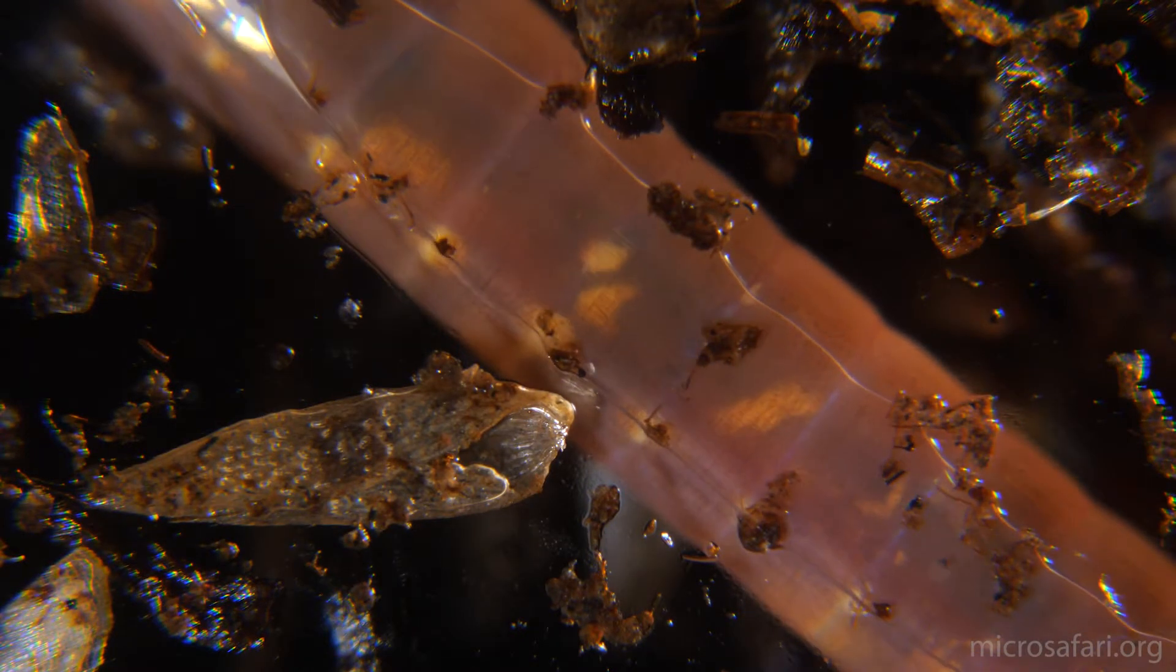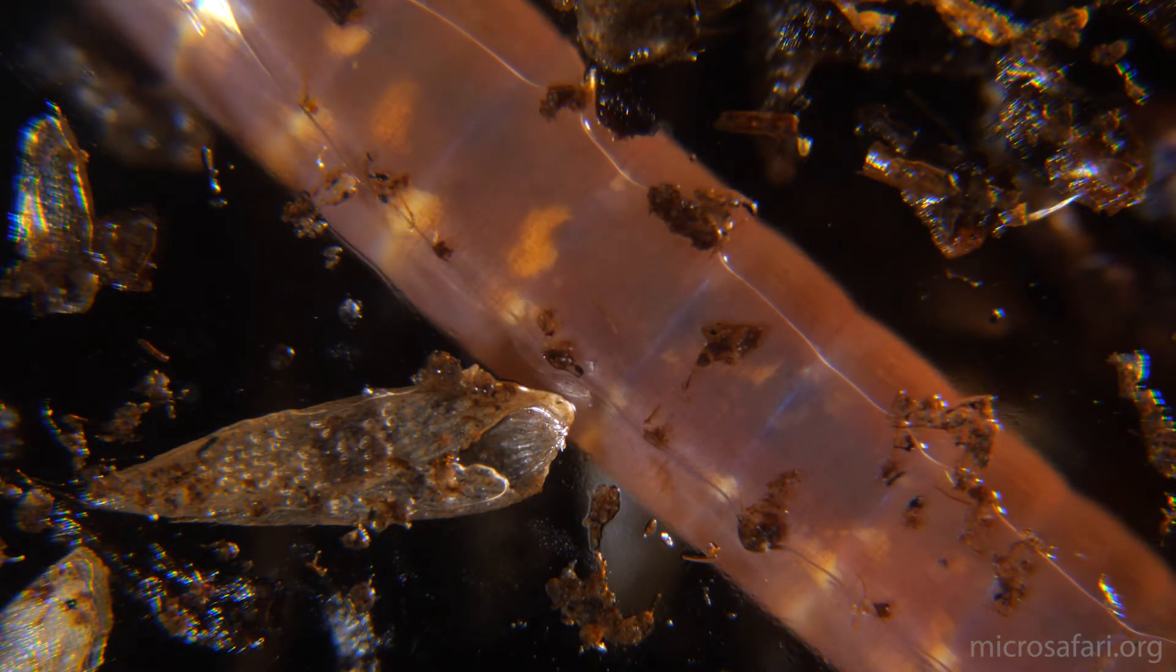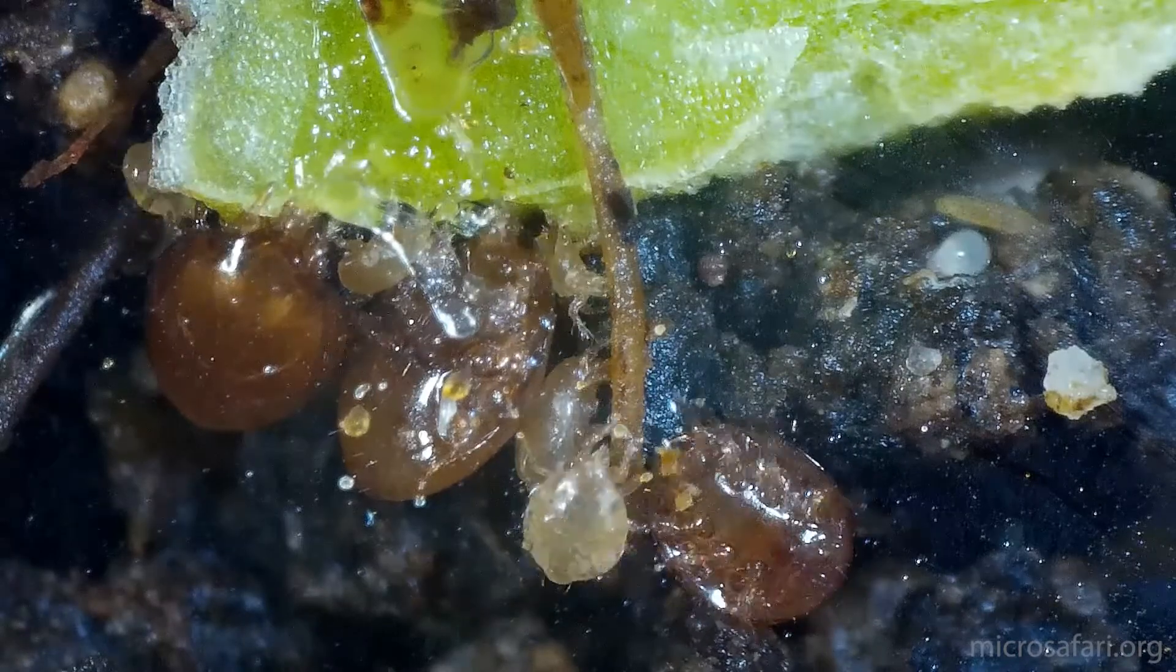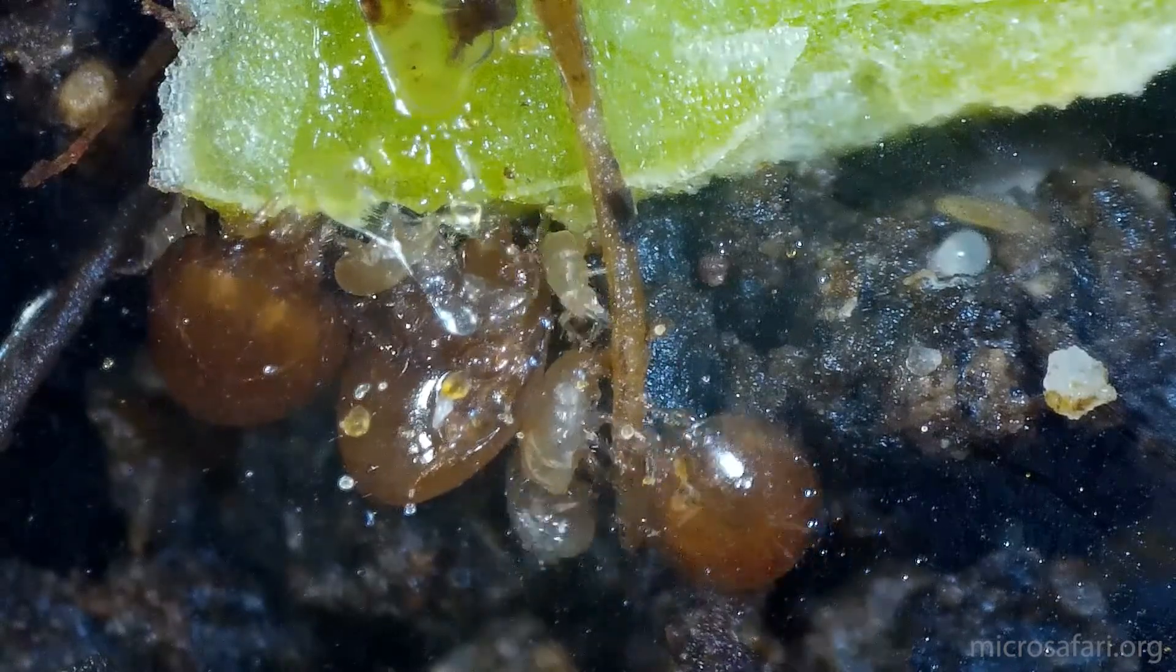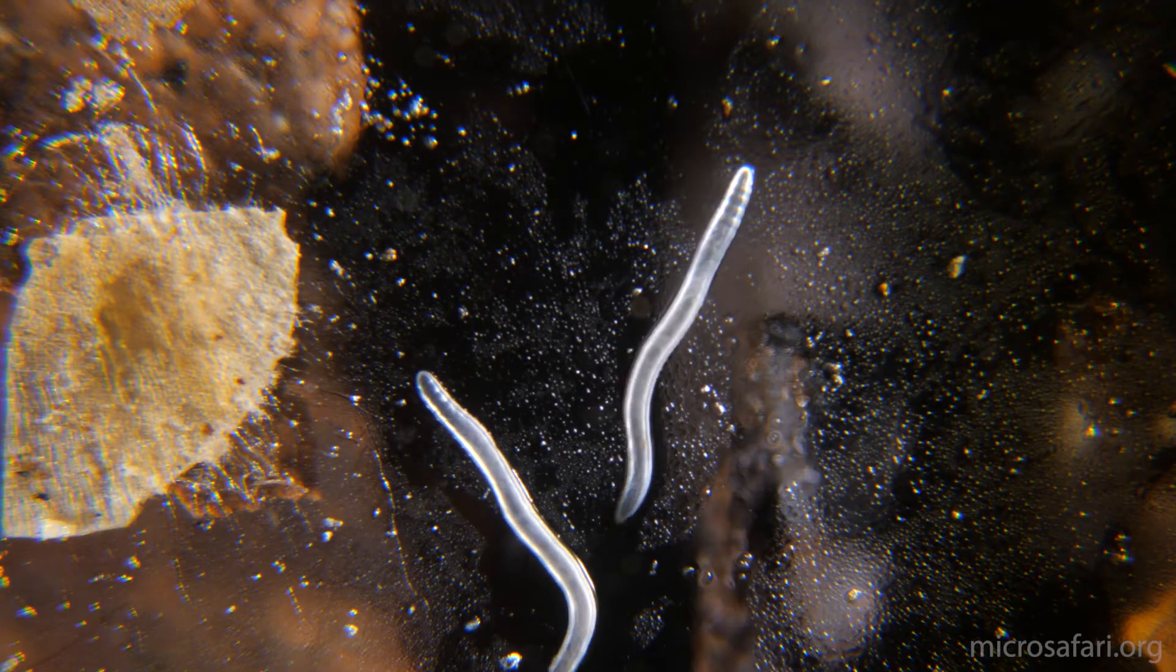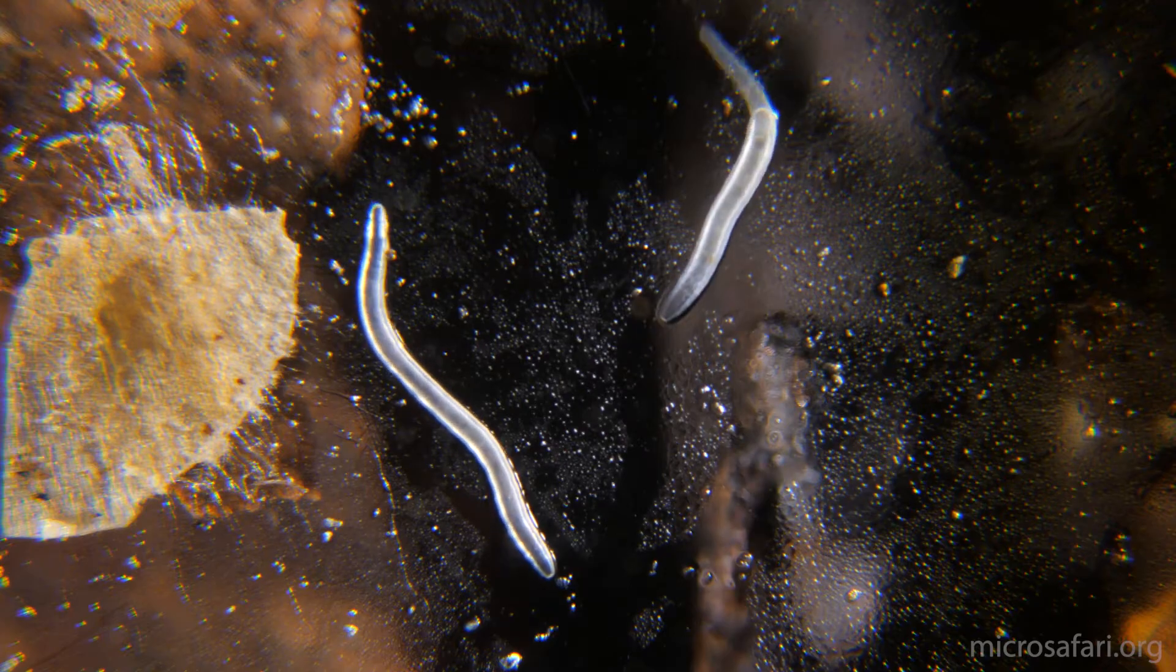One day, one of the large earthworms died of natural causes. Its body was a sudden influx of food into the ecosystem. It was a feast for all of the microorganisms, including the nematodes, springtails, and soil mites.